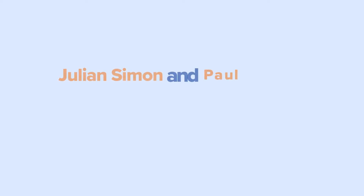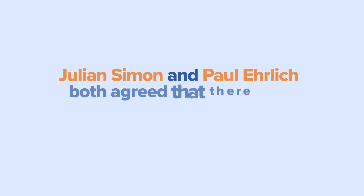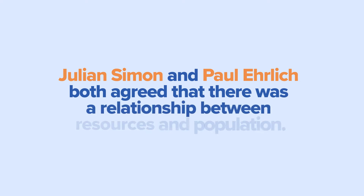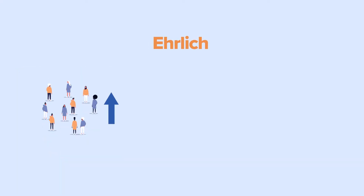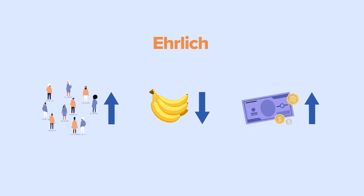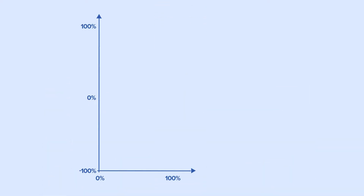Julian Simon and Paul Ehrlich both agreed that there was a relationship between resources and population. Ehrlich claimed that as the population increased, resources became more scarce and, therefore, more expensive. Simon argued that population growth leads to increasing resource abundance and lower prices.